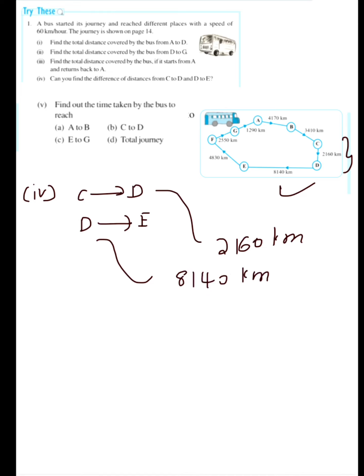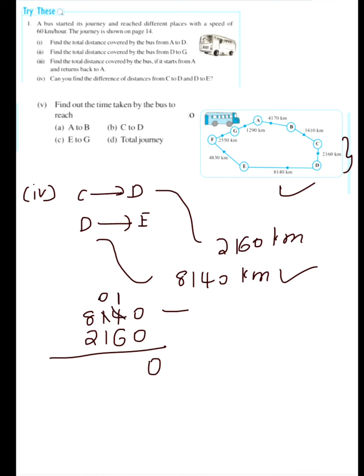The distance from D to E is 8140 km. Now subtract the smaller from the bigger: 8140 minus 2160. Calculating: 0, 0, 14, 8, 7, 10, 9, and 5 — the answer is 5980 km. The difference of distances from C to D and D to E is 5980 km.